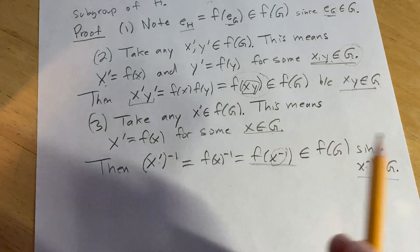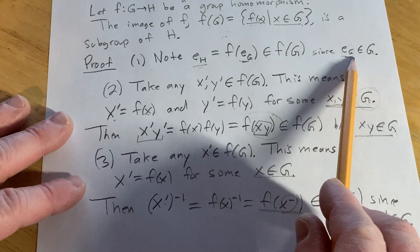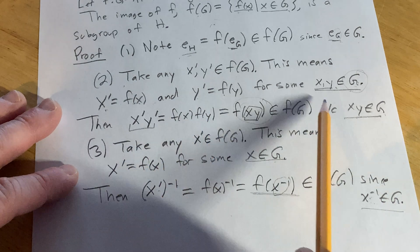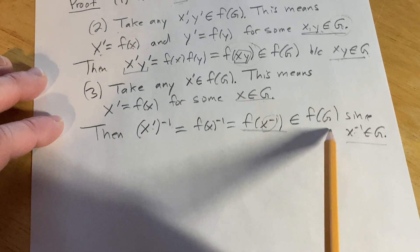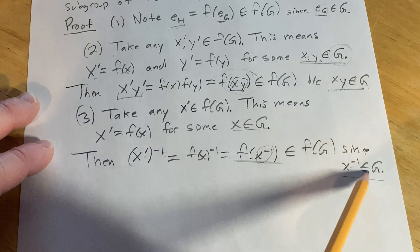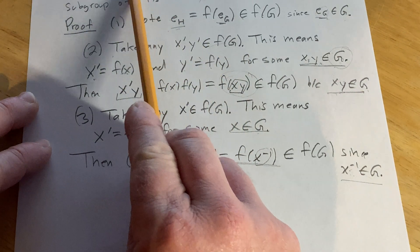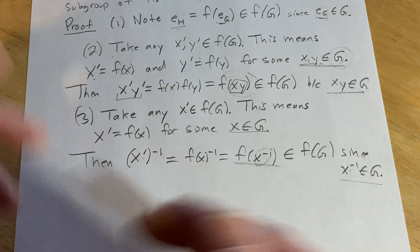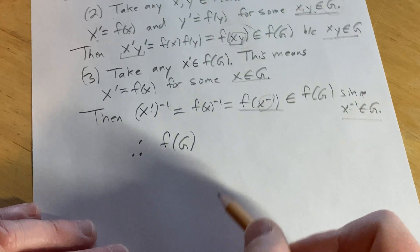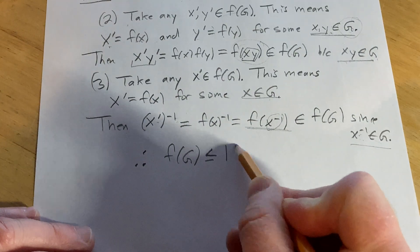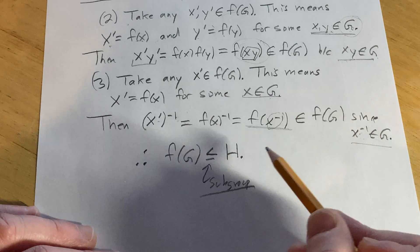That shows it's closed under inverses, so we're done. It's an interesting proof: the first condition holds because G contains the identity; the second because G is closed under the group operation; and the third because G is closed under inverses. We used all the properties of G to show that f(G) is a subgroup of H. Therefore f(G) ≤ H — where the ≤ notation means 'subgroup' — and that completes the proof.